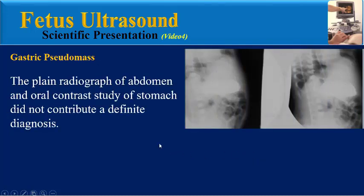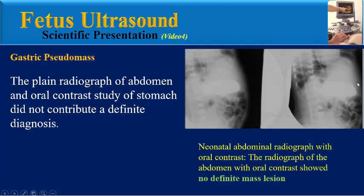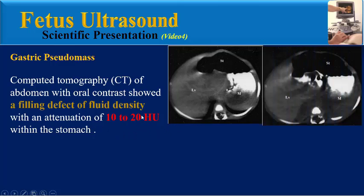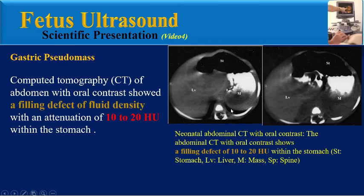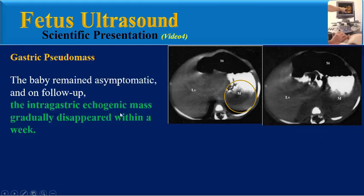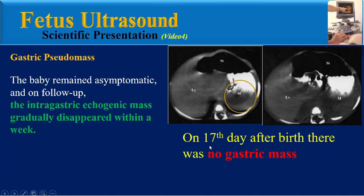A thin spike of very low velocity color flow was demonstrable at the periphery. The plain radiograph of abdomen and oral contrast study of the stomach did not contribute a definite diagnosis. As we can see in this abdominal radiograph with oral contrast, there is no definite mass lesion. CT of abdomen with oral contrast showed a filling defect of fluid density with an attenuation of 10 to 20 HU in the stomach. As we can see in this abdominal CT, a filling defect of 10 to 20 HU in the stomach. The baby remained asymptomatic and on follow-up, the intragastric echogenic mass gradually disappeared within a week.